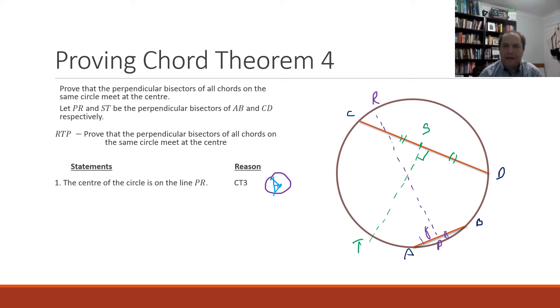Now if our center is on the line PR, the center must also be on the line ST because they're chords of the same circle and the center of the circle if it goes through CD must be on that line ST for exactly the same reason that the center is on the line PR.